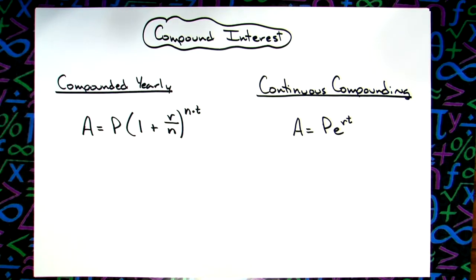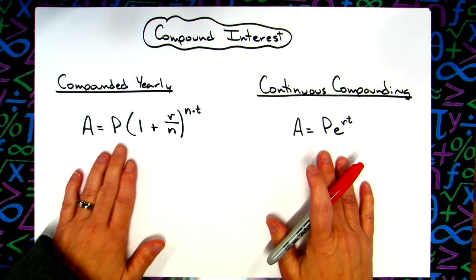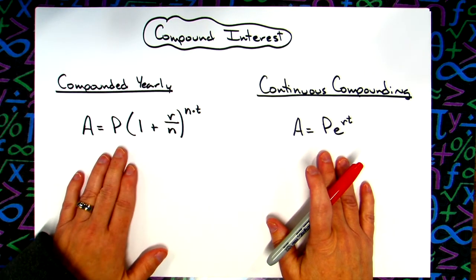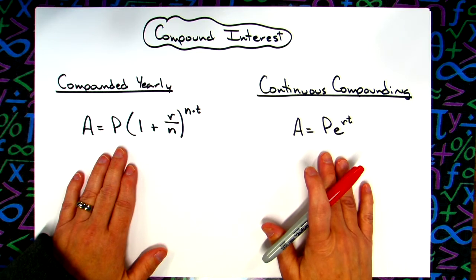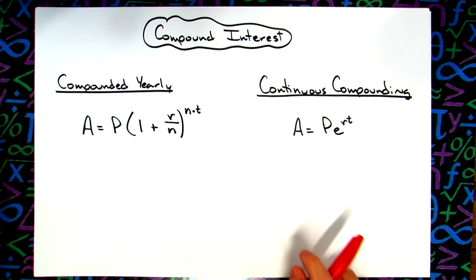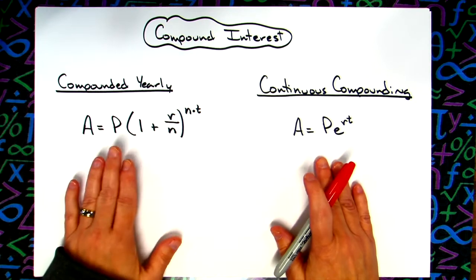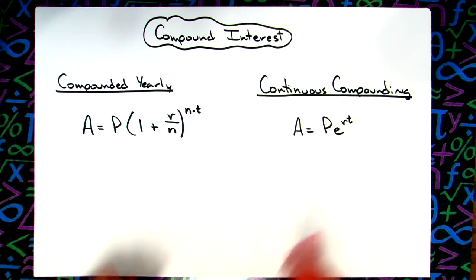In this video we're going to take a quick look at compound interest. We've got two formulas here: one compounded yearly and another one continuous compounding. Depending on the type of story problem that you're dealing with and the information that they give you will determine which one of these two formulas you're going to use.